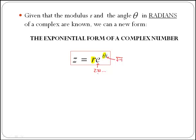You would recognize this as the exponential function, and that is what gives the name to the exponential form of a complex number. But where is the exponential form coming from?